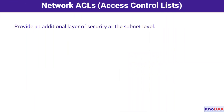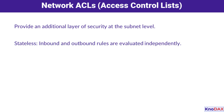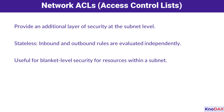Network ACLs, or access control lists, provide an additional layer of security at the subnet level. Unlike security groups, ACLs are stateless, meaning inbound and outbound rules are evaluated separately. This makes them ideal for applying broader security measures to entire subnets, complementing the instance-level protection provided by security groups.